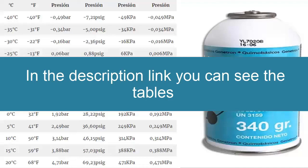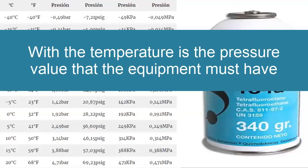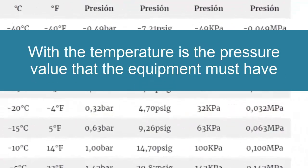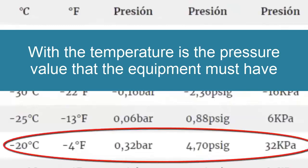The most used R-134A refrigerant gas pressures are: 1. To achieve a temperature of minus 20 degrees Celsius in the evaporator, equivalent to minus 4 degrees Fahrenheit, a low gauge pressure of 0.32 bars is needed, equivalent to 4.70 PSIG or 32 kilopascals.